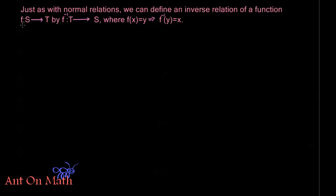If we have this function f from s to t, we can define its inverse relation by f inverse — we still use this negative 1 power to indicate inverse — from t to s, where f of x equals y implies that f inverse of y equals x. Now, f inverse is always going to be a relation. We know that f is a relation, and any time we have a relation, we can take the inverse of that relation, and the inverse will itself be a relation.